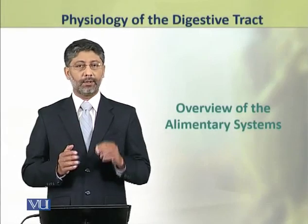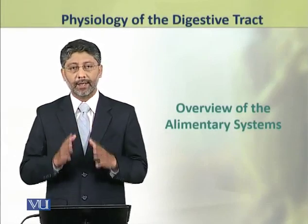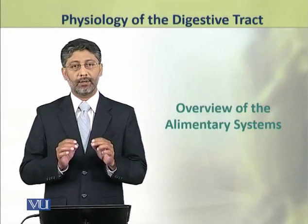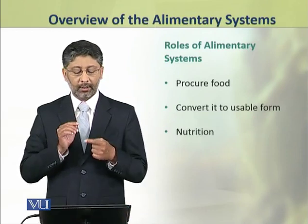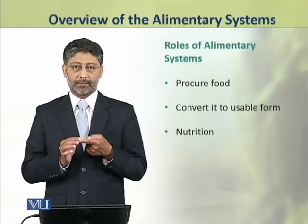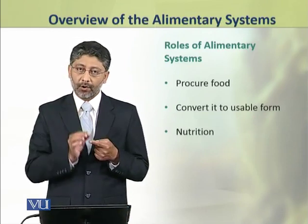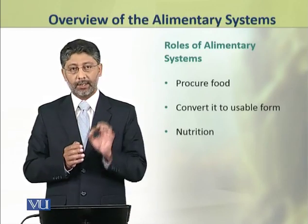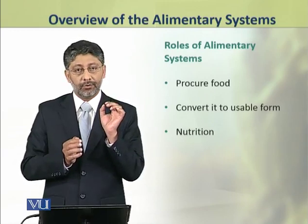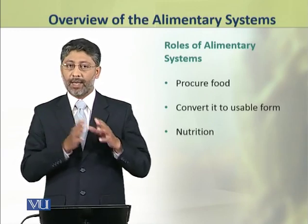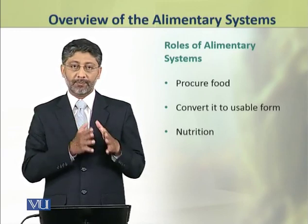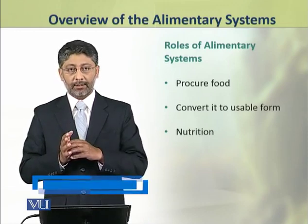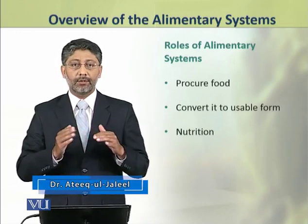In this topic, we shall take an overview of the alimentary systems found in animals. The alimentary systems are involved in procuring food and converting it into a usable form by the cells of the animal body. Both these processes of procuring and digesting or converting food are known as nutrition.